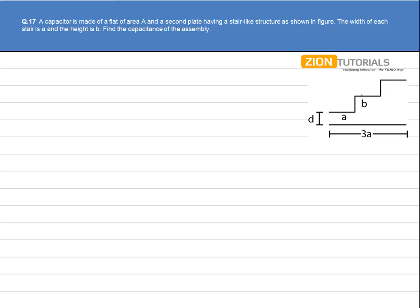Now let's say this assembly is connected by a battery of potential V. Now we have three capacitors.